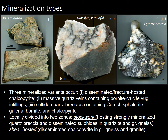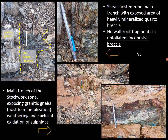You can see that the mineralization post-dates the variety of the host rocks, and therefore it can be classified as epigenetic. In the field, trenches of the shear-hosted zone expose areas of heavily mineralized quartz breccias. You can see that these breccias contain quartz clasts, but there are no wall rock fragments — it is unfoliated and incohesive. The main trench of the stockwork zone exposes granitic gneiss, which is the host of the mineralization, and you can see evidence of weathering and superficial oxidation. Here, specifically, you can see the presence of azurite and malachite.